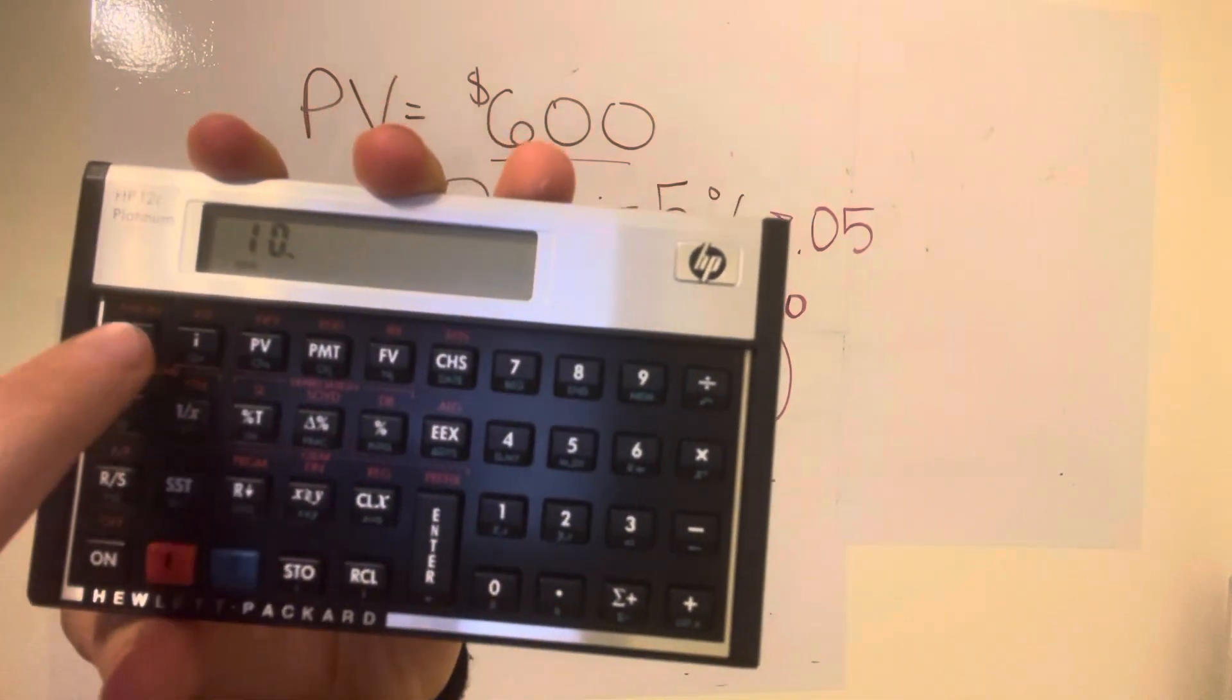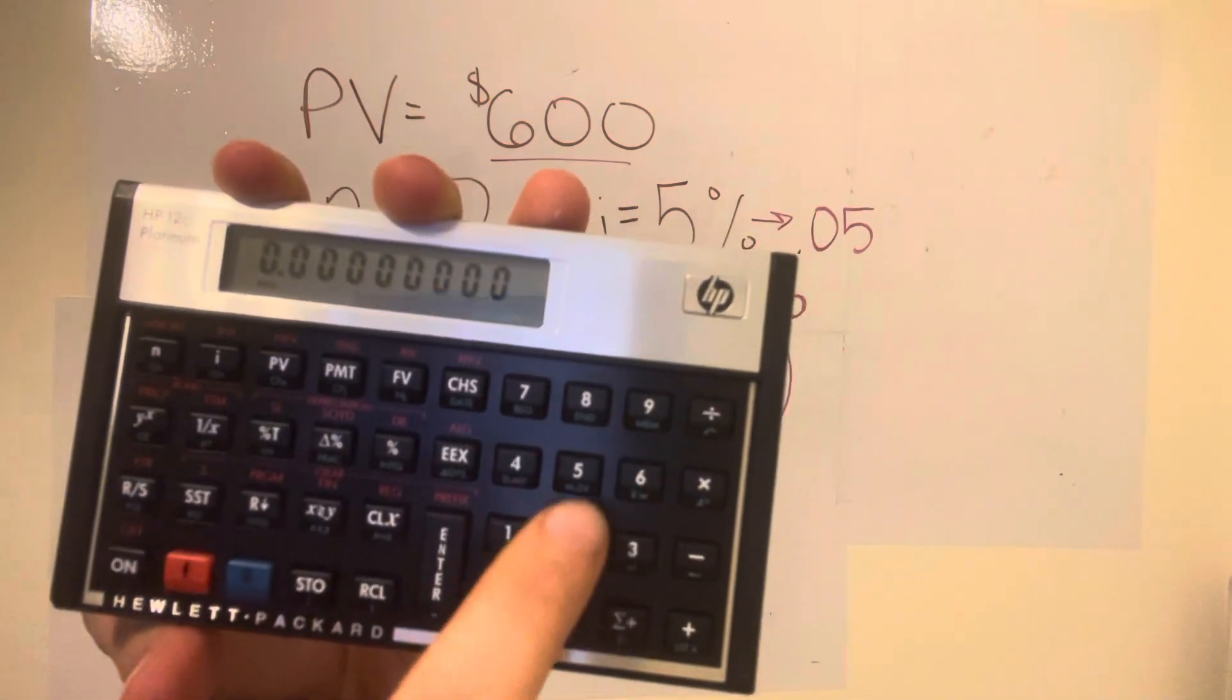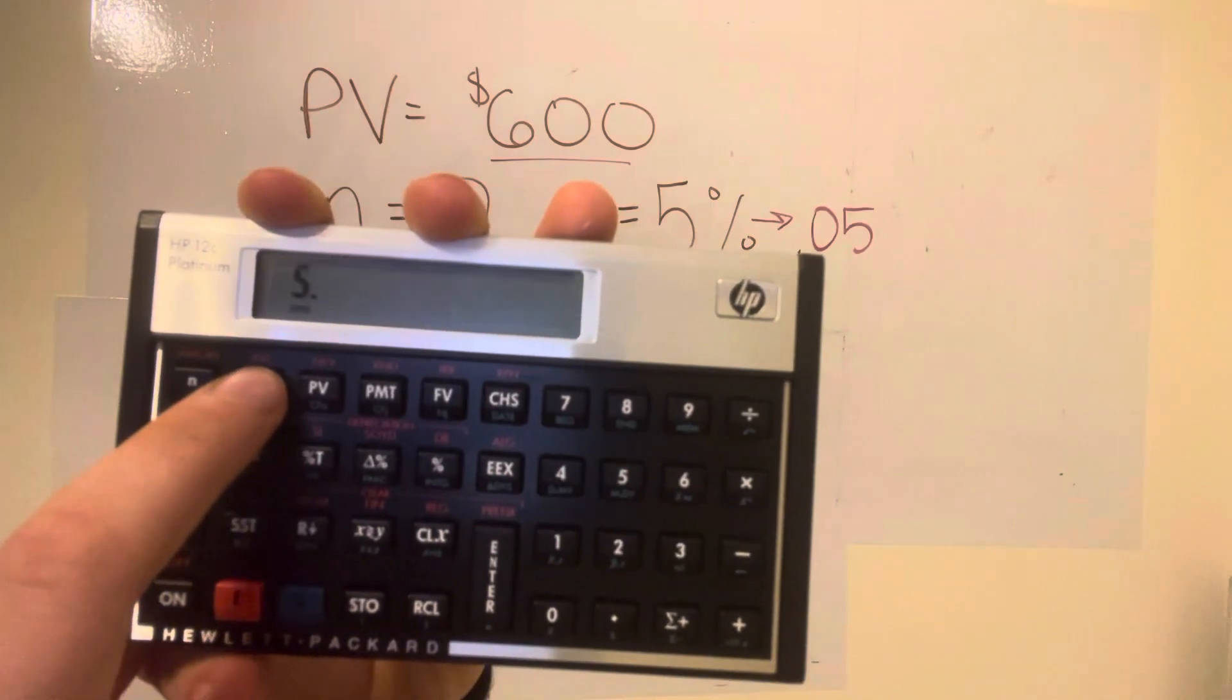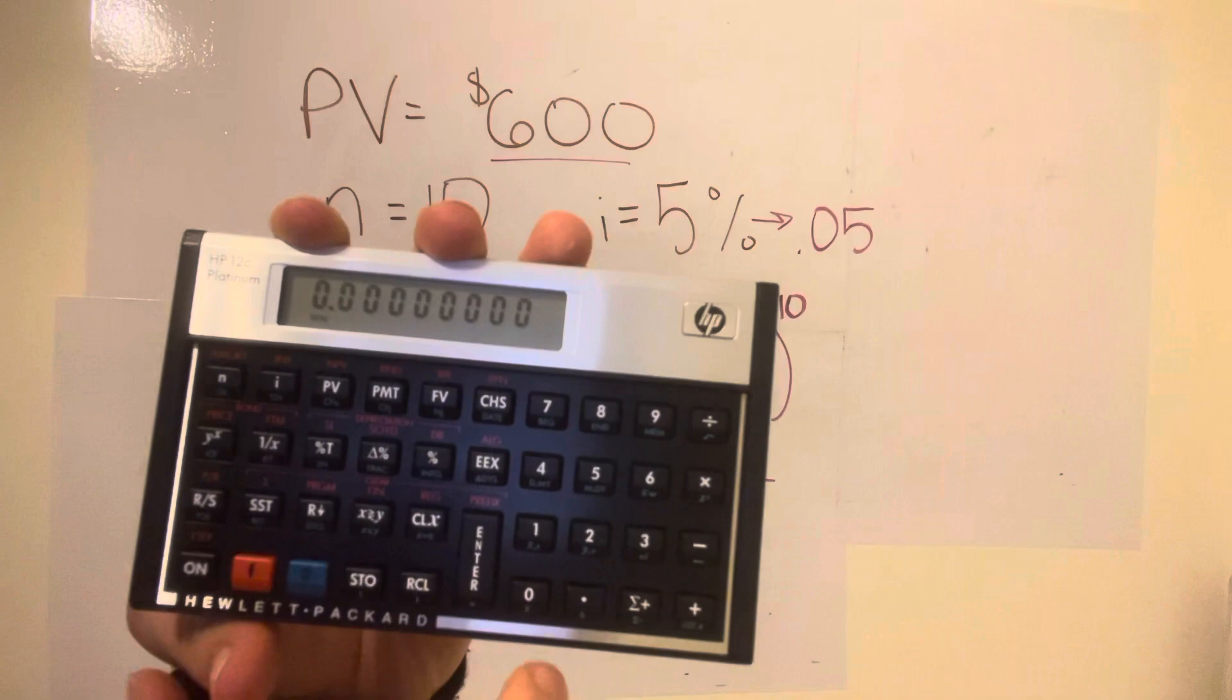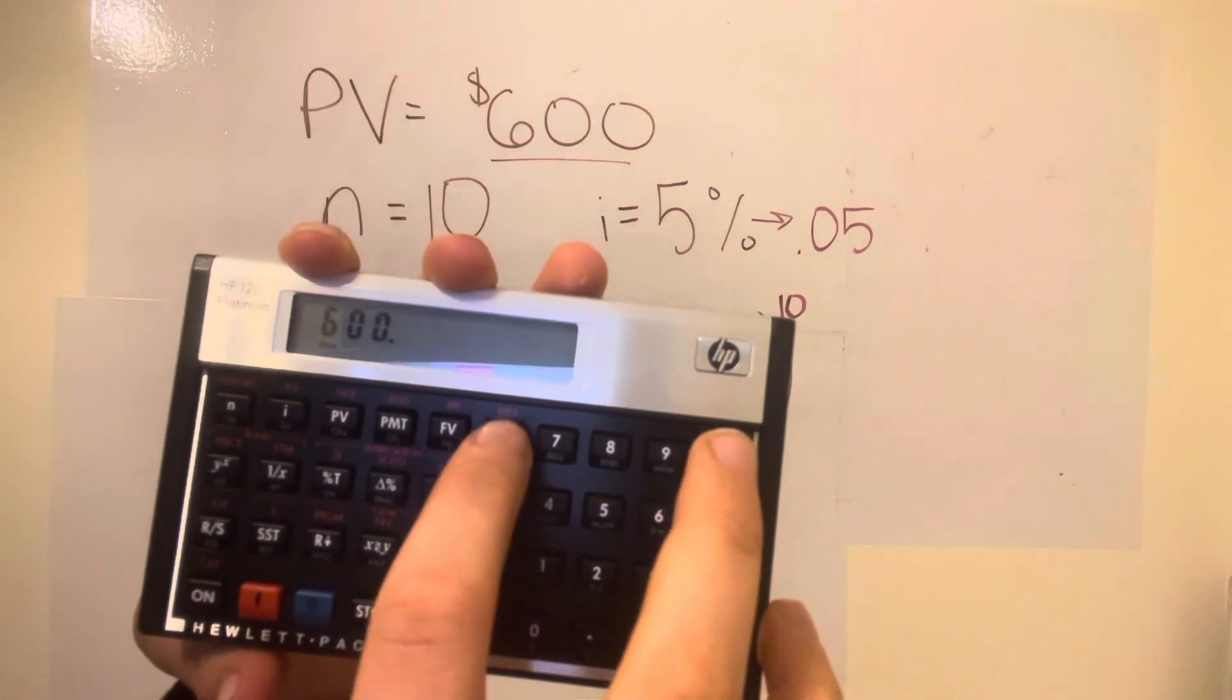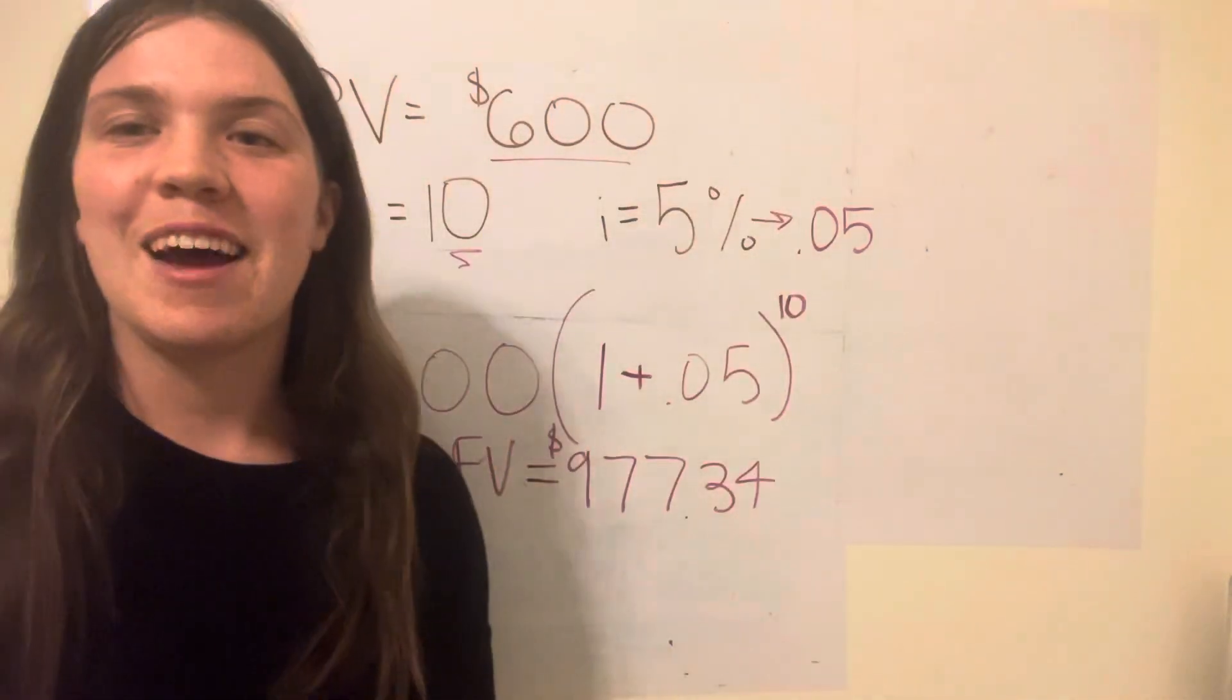10 is going to go into n, 0 to payments, you don't always have to enter that, and then 5, don't turn it into a decimal, is i, and then our future value is 0, what? Sorry, did I enter 600 to future value? There we go. Sorry about that, I pressed the wrong button.